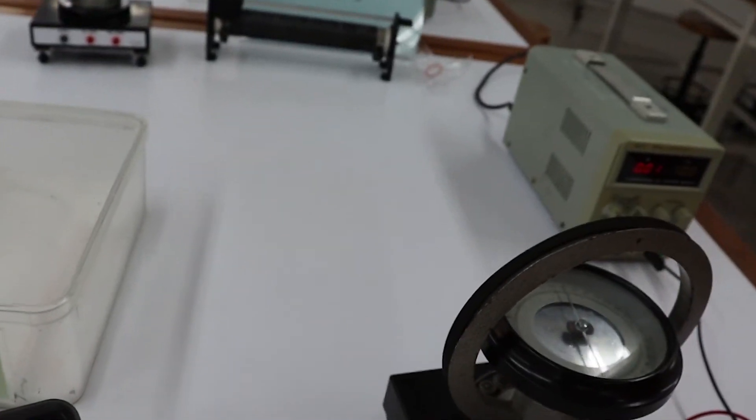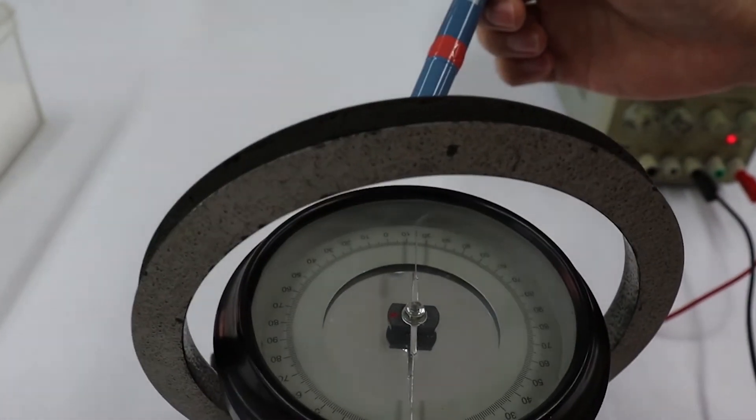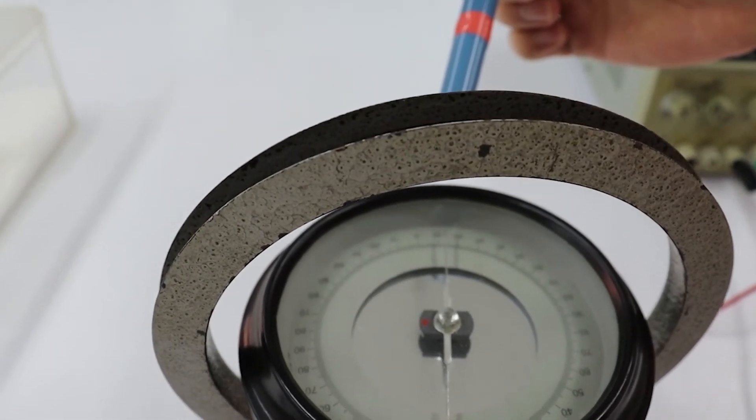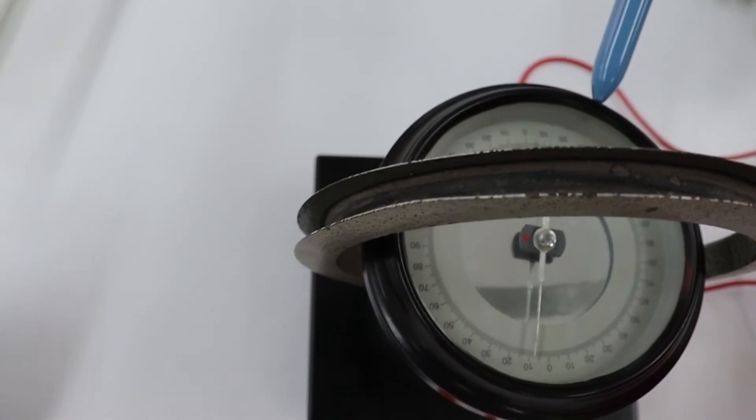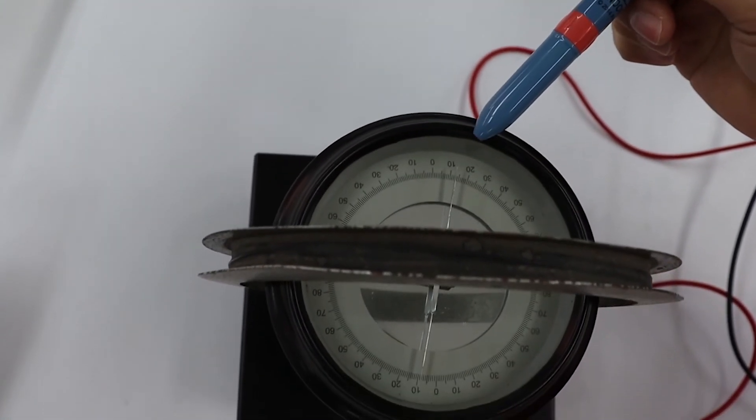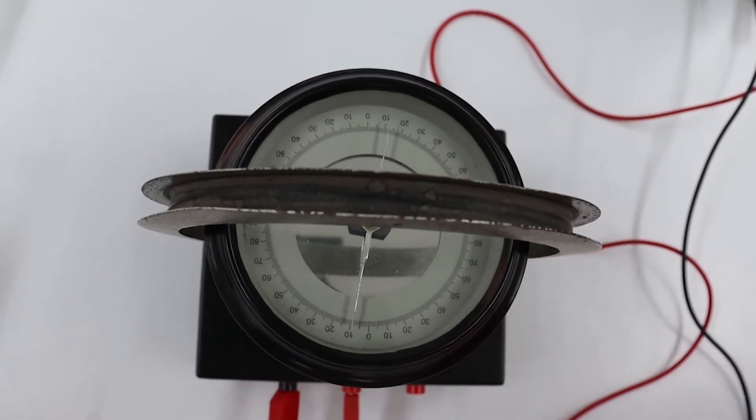As we can see from the pointer, the needle will be bent from the previous position. And, until the pointer points at an angle of 10, 20, 30, 40 and 50 degrees, and record the current values, respectively.